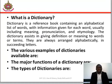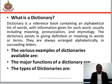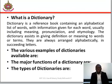What is a dictionary? A dictionary is a reference book containing an alphabetical list of words with information given for each word, usually including meaning, pronunciation and etymology. The dictionary assists in giving definition of meaning to words or terms. They are always arranged alphabetically in succeeding letters. There are various examples of dictionary types.